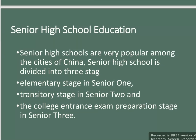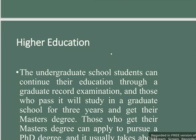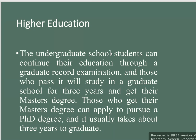Senior high schools are very popular among cities in China and are divided into three stages: the elementary stage in Senior 1, the transitional stage in Senior 2, and the college entrance exam preparation stage in Senior 3. Higher education, commonly known as college education, starts when students are over 18 and is composed of tertiary vocational school (two to three years), technological academy (three years), and undergraduate school (four years). Undergraduate students can continue their education through a graduate examination; those who pass will study in graduate school for three years and earn a master's degree. Those with a master's degree can apply to pursue a PhD, which typically takes about three years to complete.